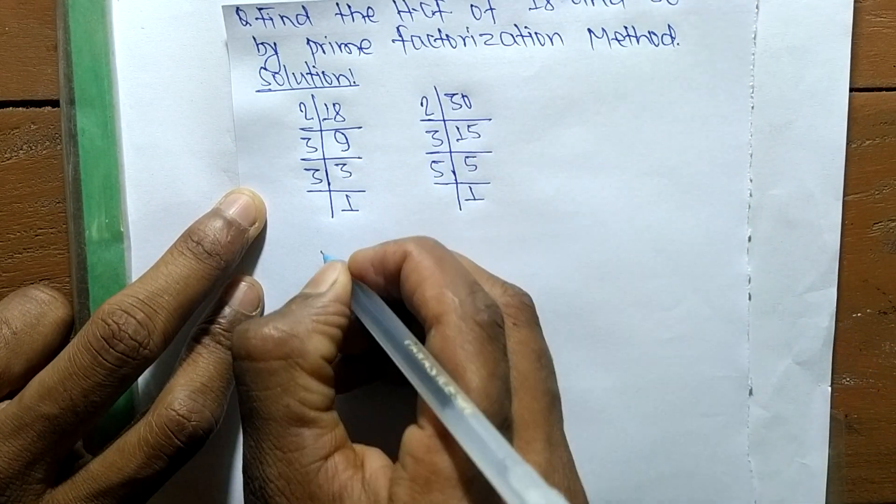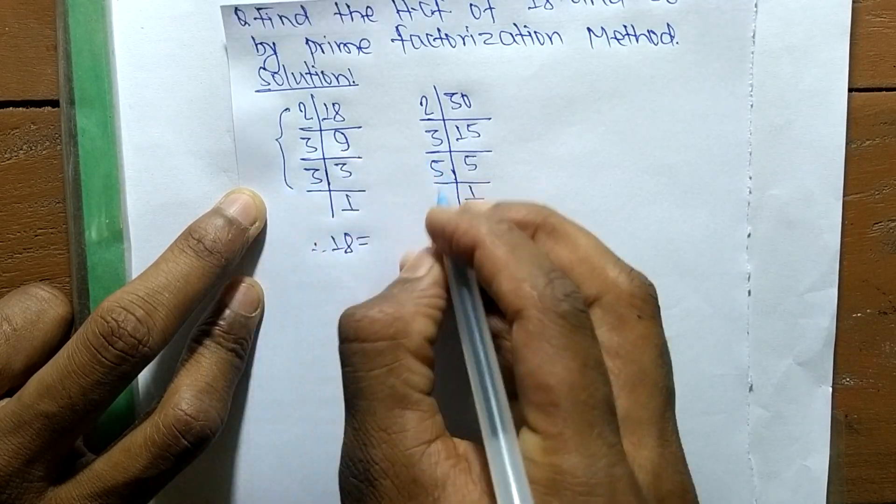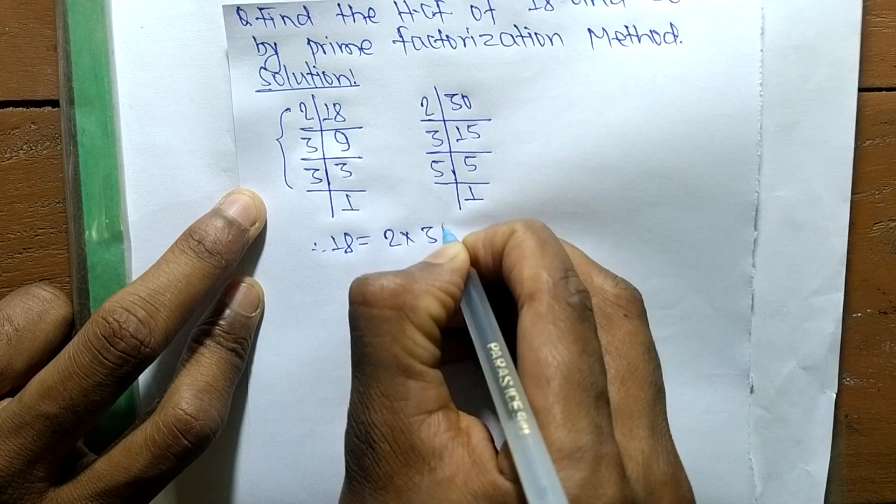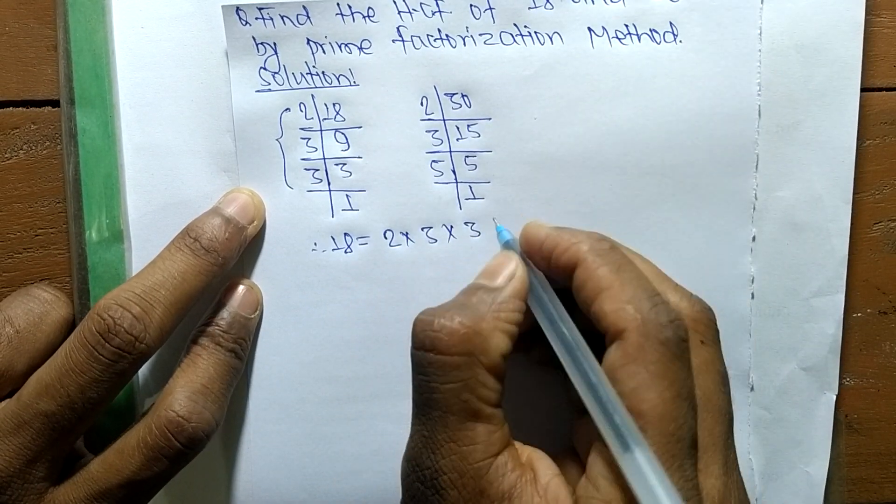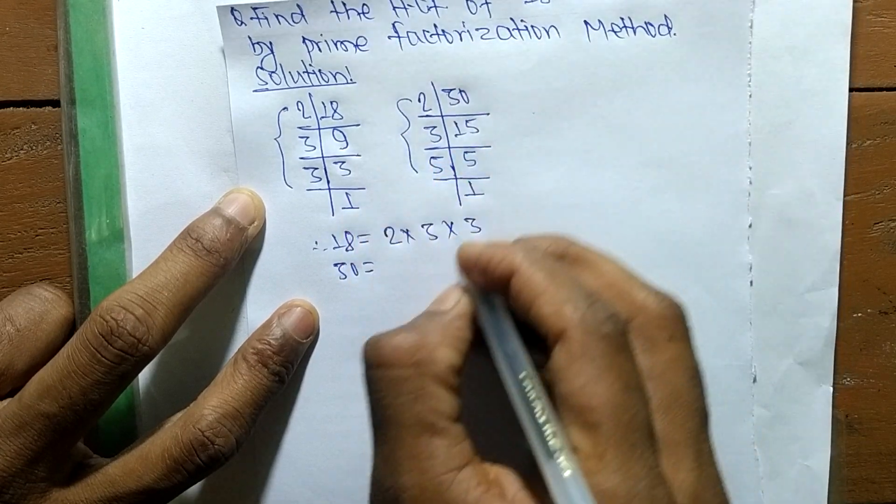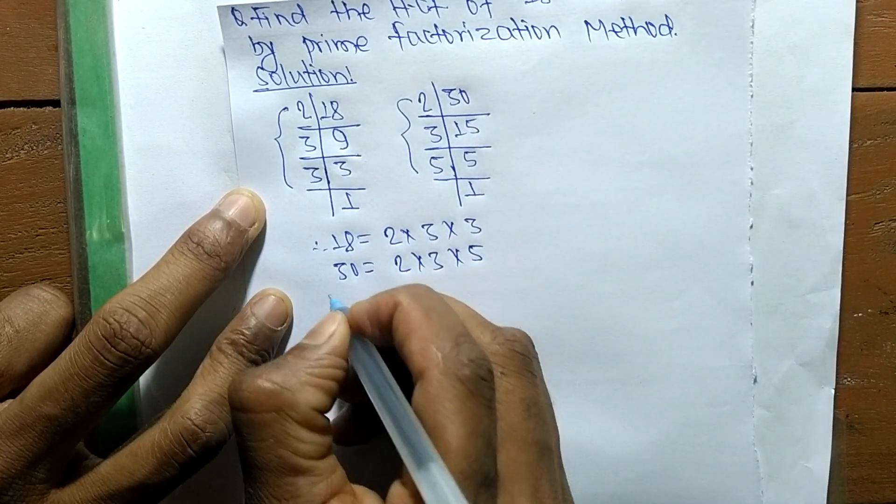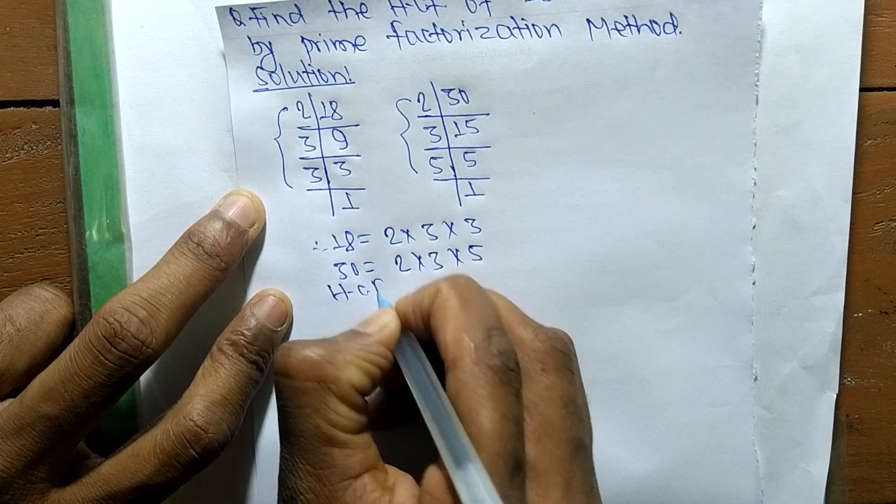Now from these prime factors, we can write 18 equals 2 times 3 times 3. Likewise, for 30 it becomes 2 times 3 times 5.